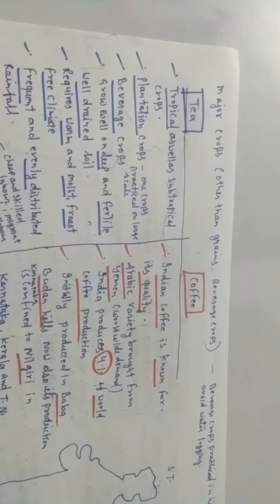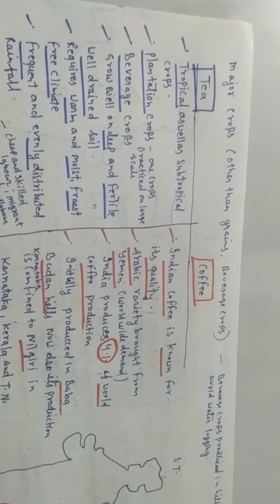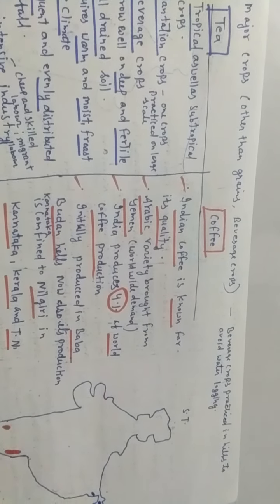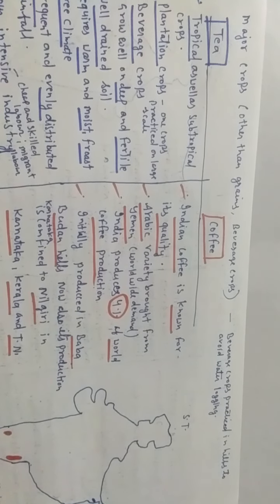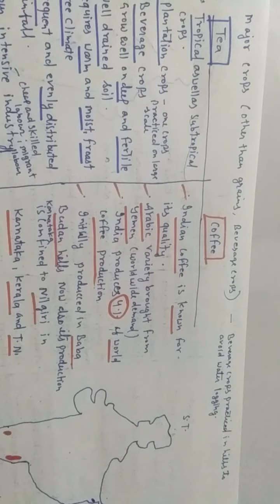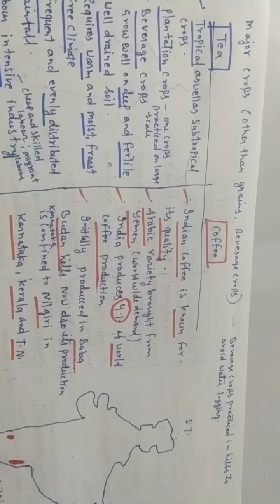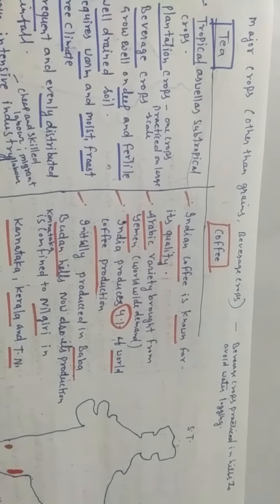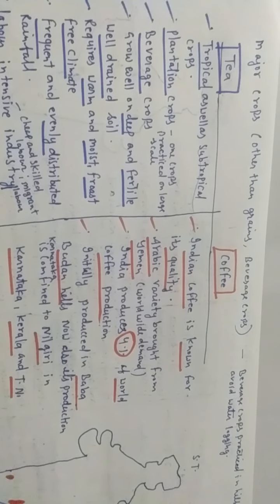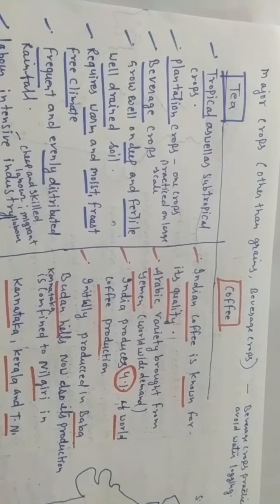We will discuss some major crops other than grains, meaning beverage crops. Beverage crops are crops which we use for our drinking purpose. Beverage crops are practiced in hill regions only to avoid water logging. This is a very important question: Why are beverage crops only practiced in hill regions? First, we will discuss tea.